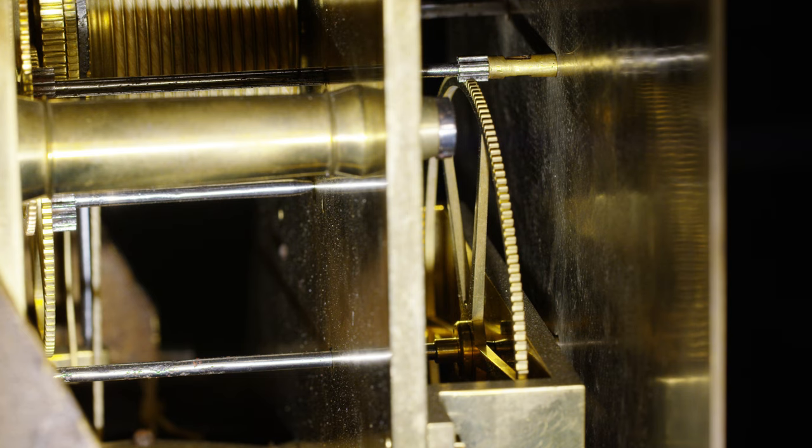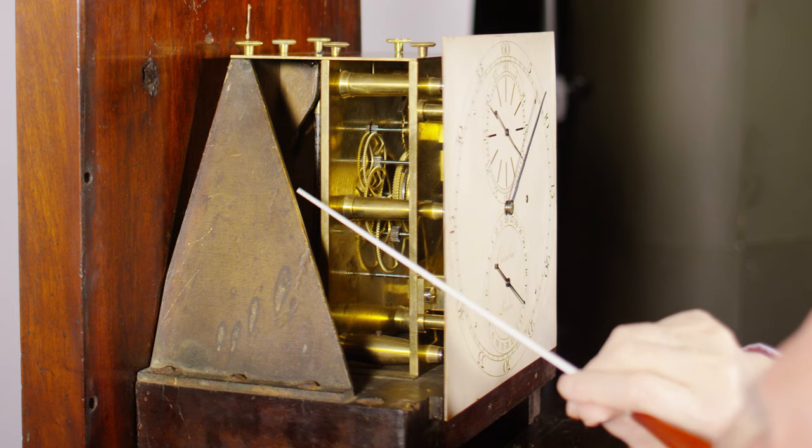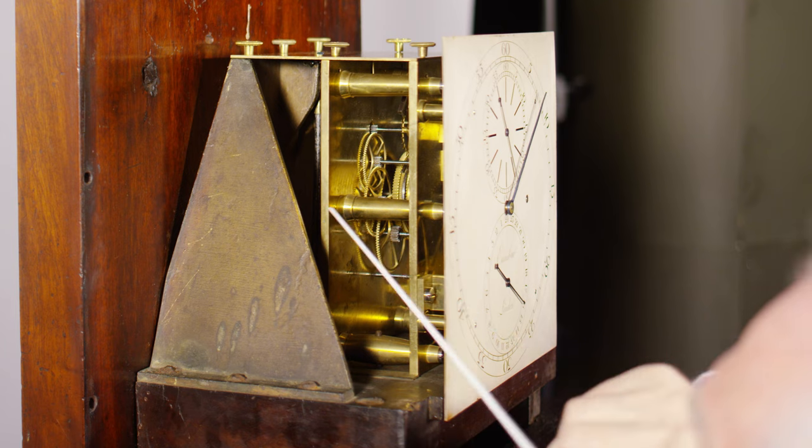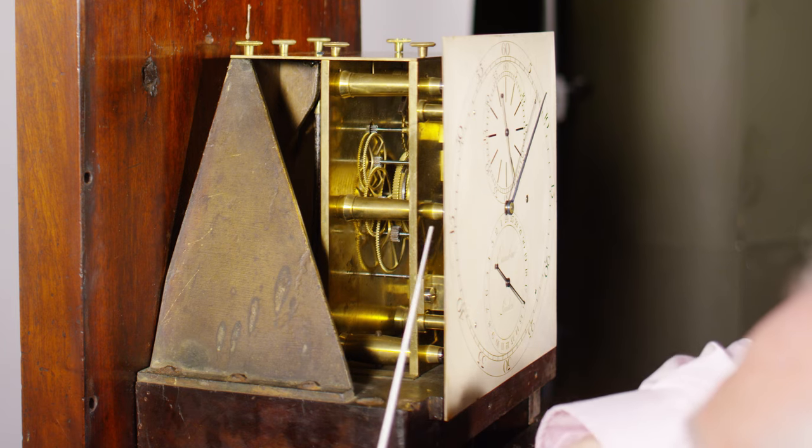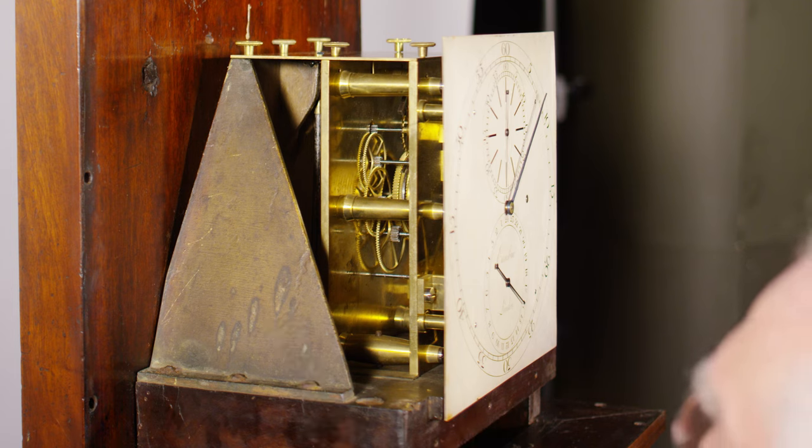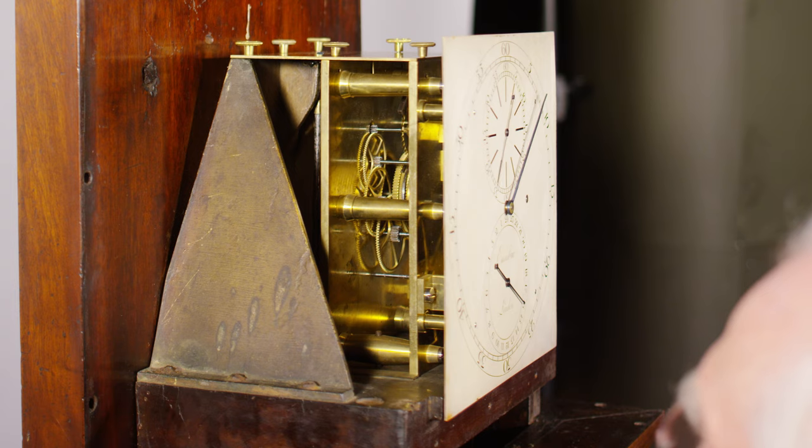The pillars are typical of the original Fromanteel construction. They're riveted firmly into place into this back plate and then the front one is with a screwed cap to mount the front plate. So again it's a really rigid construction, big strong pillars pulled together with the screws.